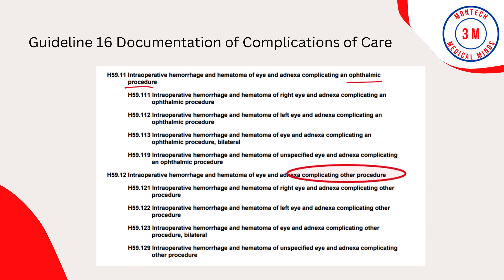Guideline 16: Documentation of Complications. Code assignment is based on the provider's documentation of the relationship between the condition and the care or procedure, unless otherwise instructed by the classification. There must be a cause-and-effect relationship between the care provided and the condition, and the documentation must support that the condition is clinically significant. Every systemic chapter has a classification of complications under intraoperative and postoperative complications, further classified by whether the complication occurred during the same system procedure or another system procedure. Review the image below for an example.